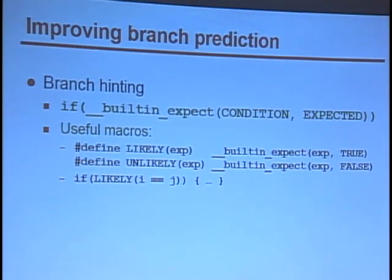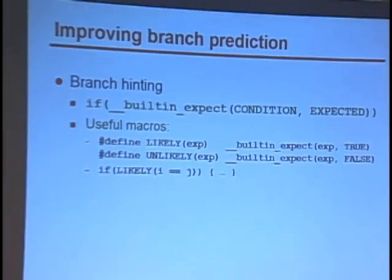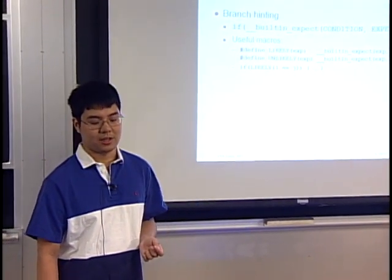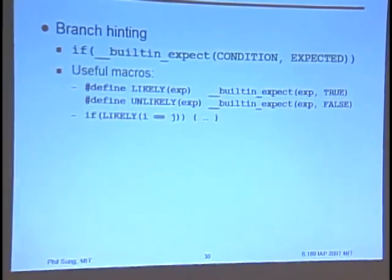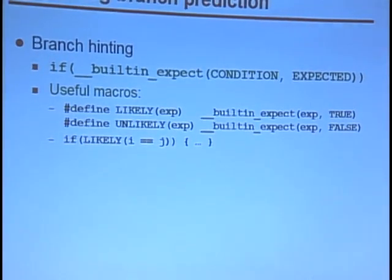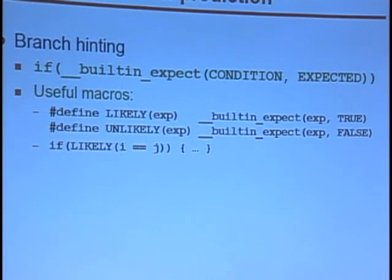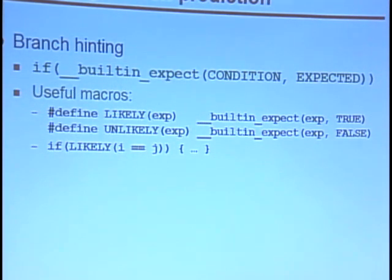You can give hints to the compiler to tell it what you think the outcomes of branches will be, and this can help in some circumstances. There are these macros you can define using the built-in __builtin_expect compiler intrinsic. If you put that inside an if, it means run the if as if the condition were the expression, but indicate that you expect the value of the condition to be, for example, true or false.